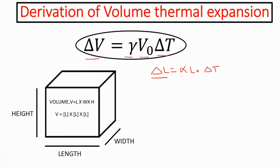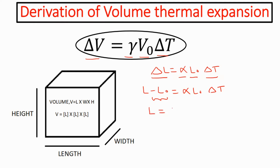Here, delta L is the change in length, alpha is the linear thermal expansion coefficient, L0 is the initial length, and delta T is the change in temperature. Expanding this equation, delta L becomes L minus L0 equal to alpha L0 delta T. Moving minus L0 to the right-hand side, the equation becomes L equal to L0 plus alpha L0 delta T. Since L0 is a common term, this simplifies to L equal to L0 multiplied by 1 plus alpha delta T.